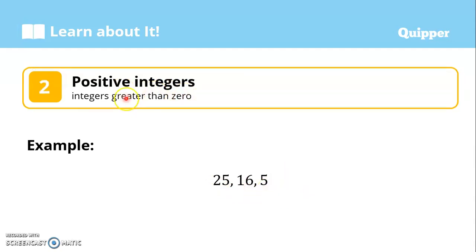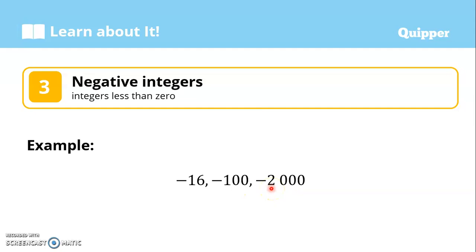Positive integers are integers greater than zero, or on the number line, those are the numbers to the right of zero — for example, 25, 16, 5. Negative integers are integers less than zero; on the number line, those are numbers to the left of zero — for example, negative 16, negative 100, negative 2000, and so on.